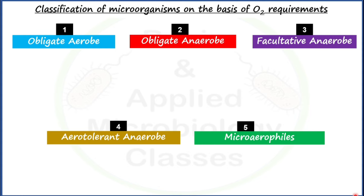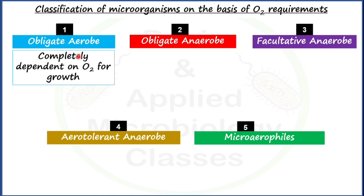Let's start with obligate aerobs. Obligate aerobs are those microorganisms which are completely dependent on oxygen for their growth — if oxygen is absent, the growth of such microorganisms will not be favored. This is because they have metabolic processes whose operation requires oxygen as an important component.